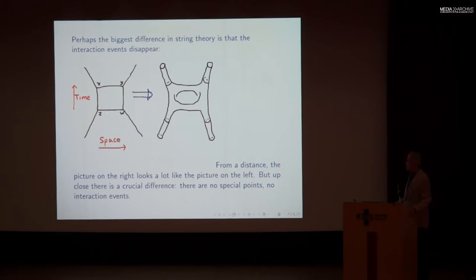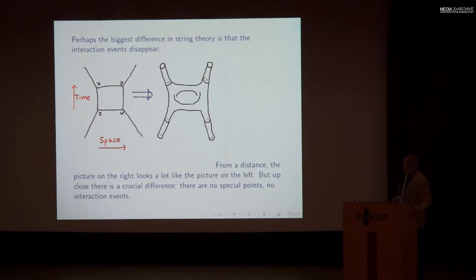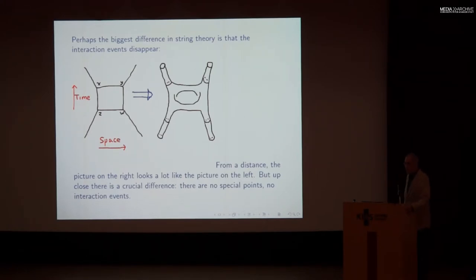I've drawn a Feynman diagram on the left, and a stringy version of the Feynman diagram on the right. A particle traces out a curve in space, but a string traces out a tube in space. When a particle splits into two particles, that occurs at a definite event, labeled z, where one breaks into two. But a string can split into two strings in a completely smooth way — without your being able to say exactly when and where that happens. From a distance, the picture on the right looks a lot like the picture on the left. But up close, there's a crucial difference: there are no special points, no interaction events.